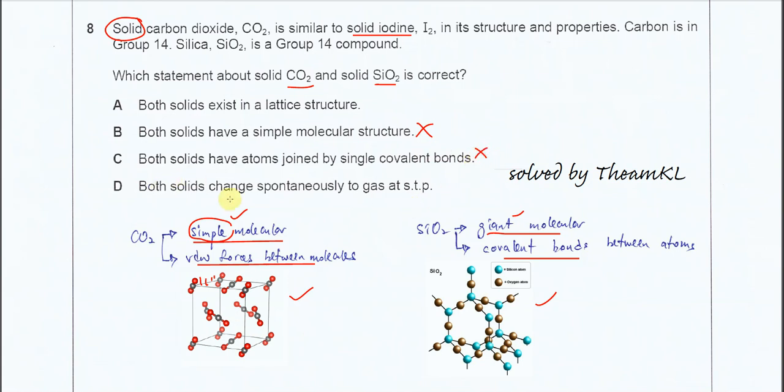D: both solids change spontaneously to gas. CO2 easily change to gas but SiO2 it's quite difficult for it to change to gas at the STP.